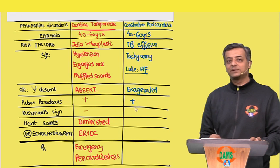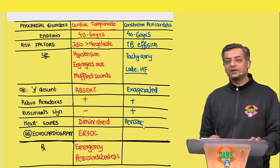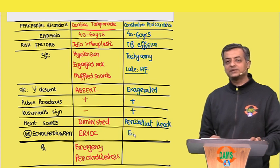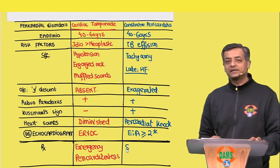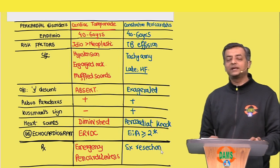Heart failure presentation can look similar in both conditions, but in constrictive pericarditis the Y descent is exaggerated, and the question will contain both pulsus paradoxus and Kussmaul's sign along with the presence of a pericardial knock. The echocardiogram will show an E-to-A ratio that is supranormal, which is diagnostic, and surgical resection is the only potential cure.